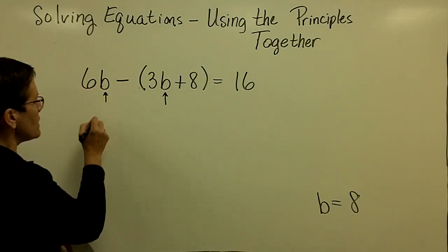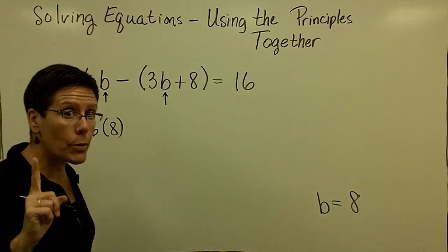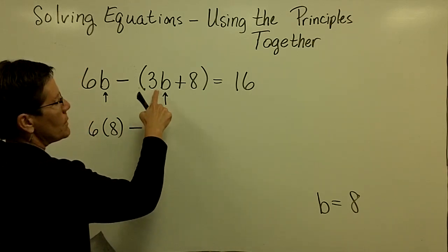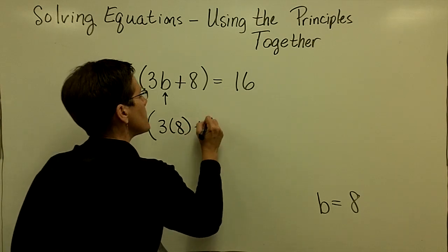So up front here, I have 6 times 8. That will be 48 in a minute, but I do within the parentheses first via order of operations. Minus 3 times B, which is 8.